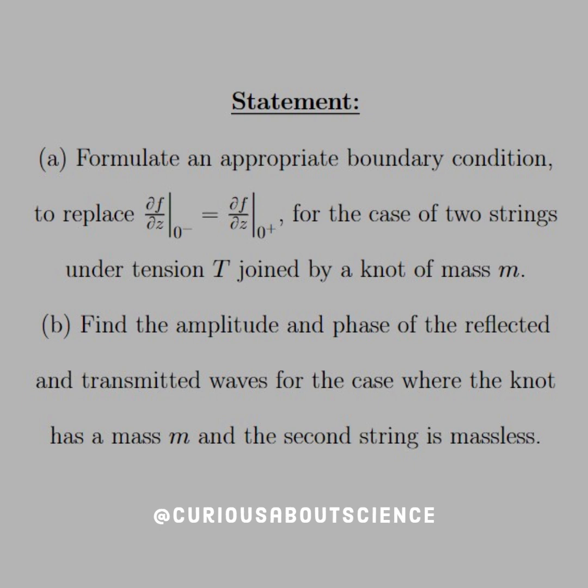Part B: find the amplitude and phase of the reflected and transmitted wave for the case where the knot has mass M and the second string is massless.